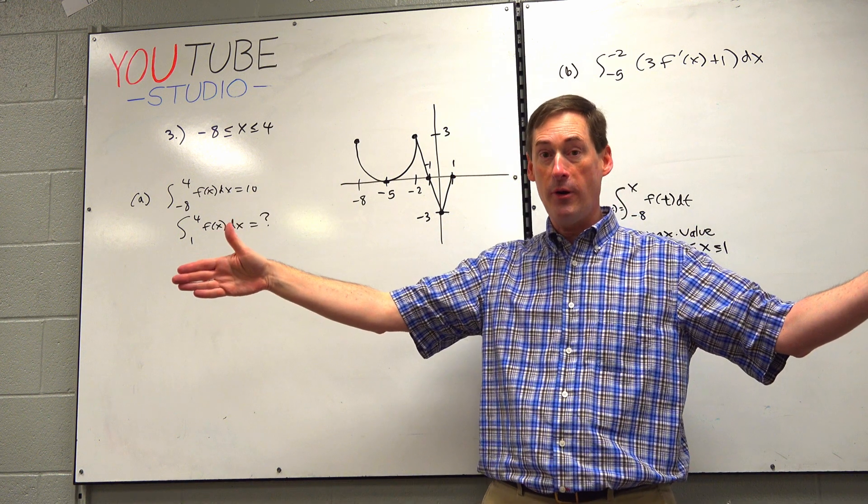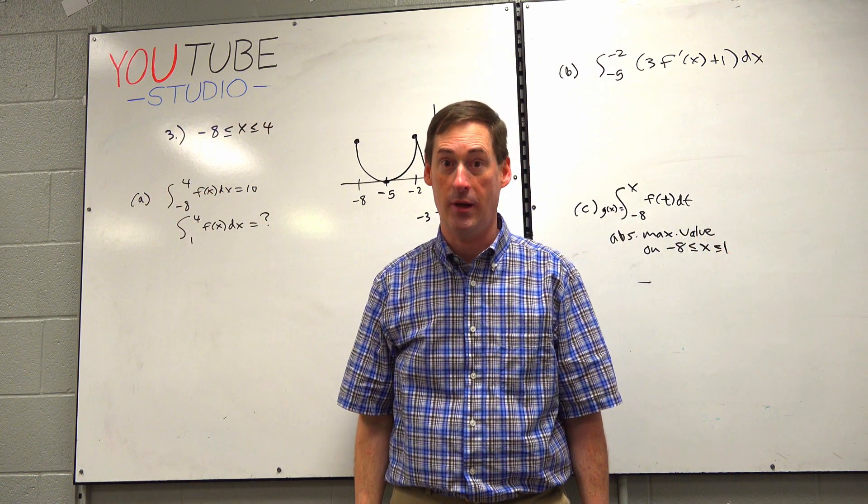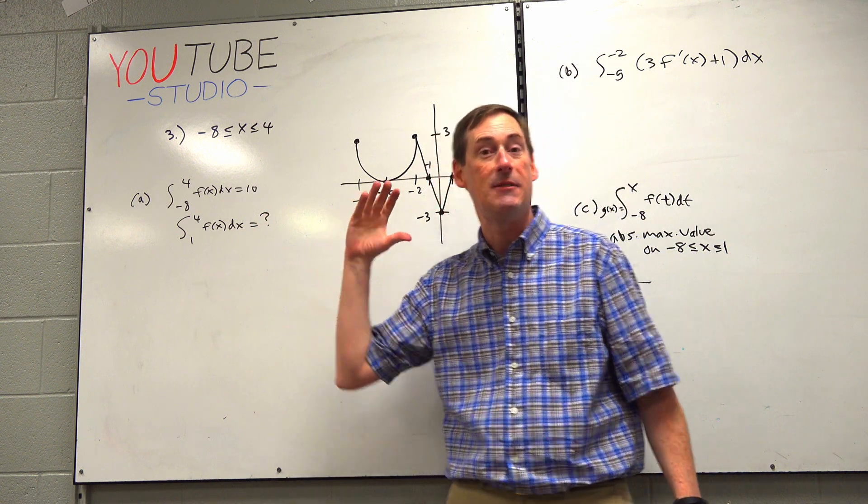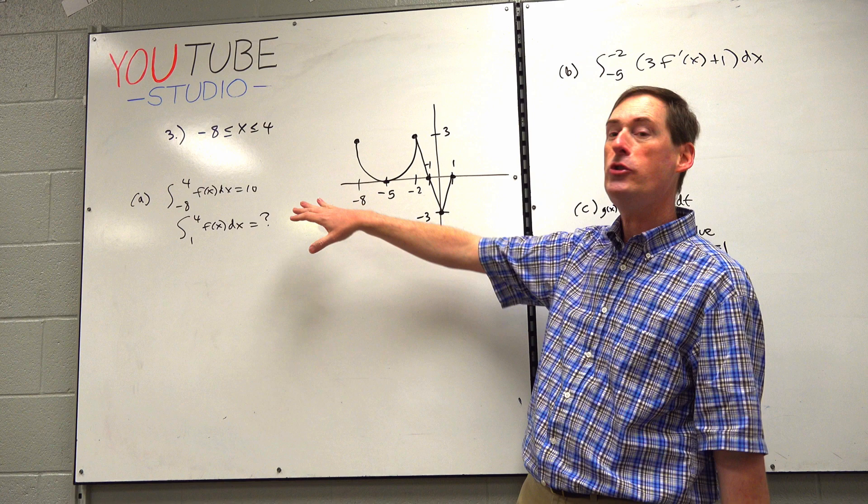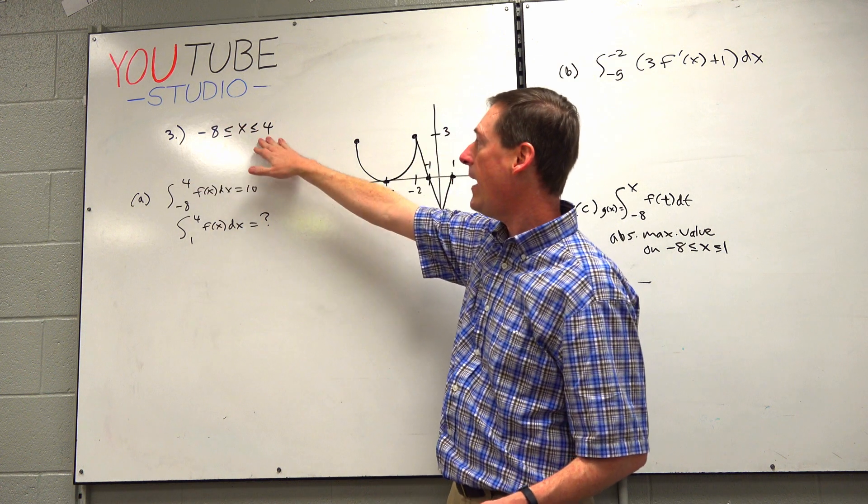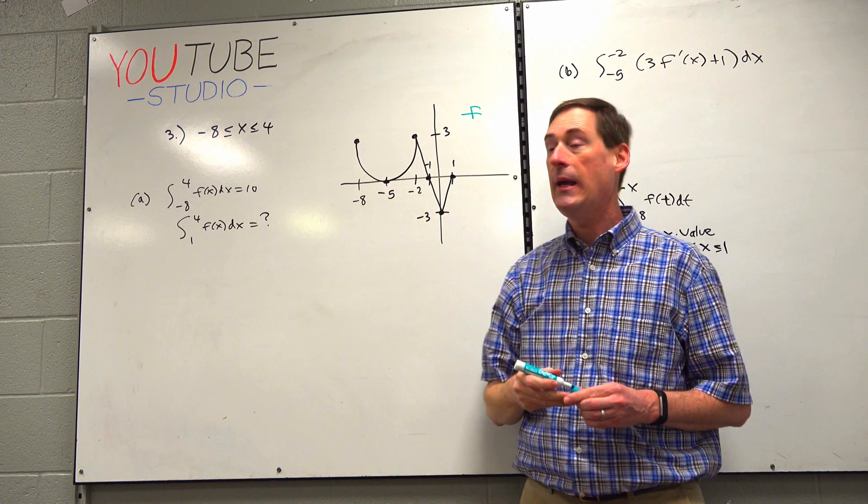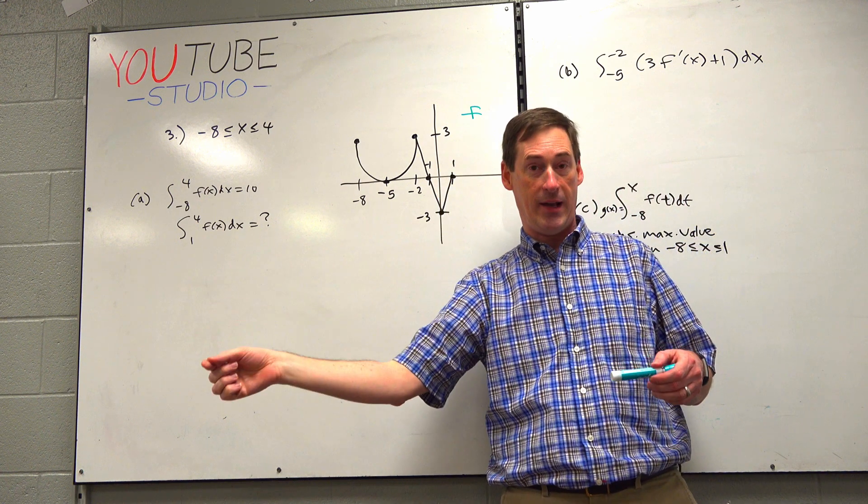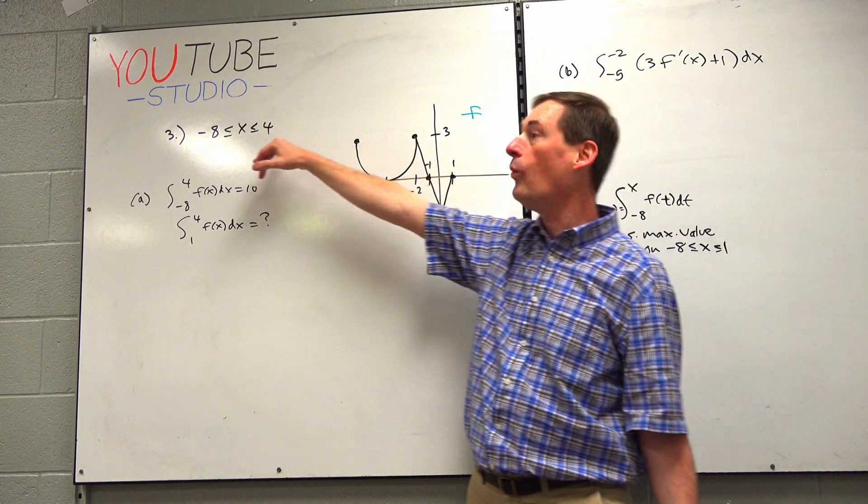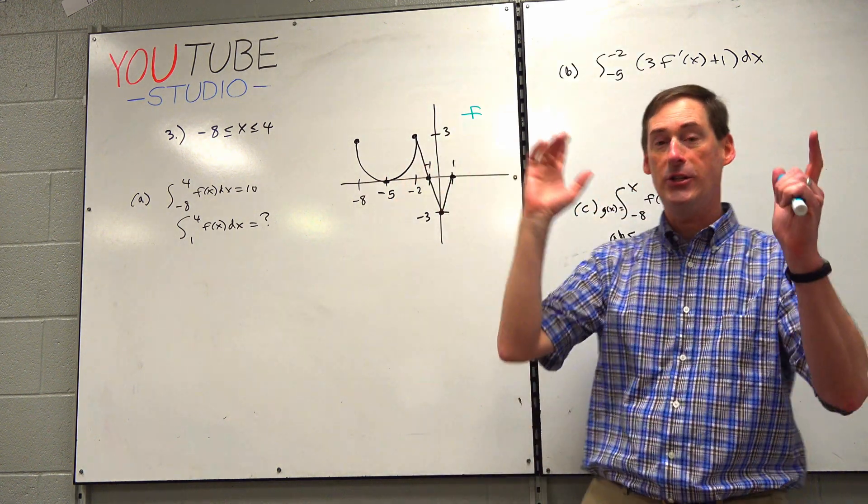If you get all four parts perfect, it's worth nine points per free response multiple part question. There are six free response - nine times six is 54 points up for grabs. Let's get as many as we can. So continuous from negative eight to four, here's the actual graph of F. From negative eight to one, we don't see one to four, so there's probably going to be a question about that, the part we can't see.